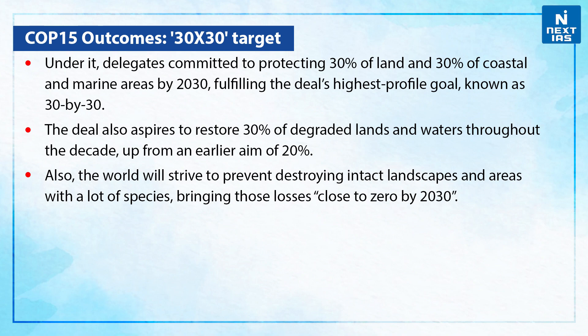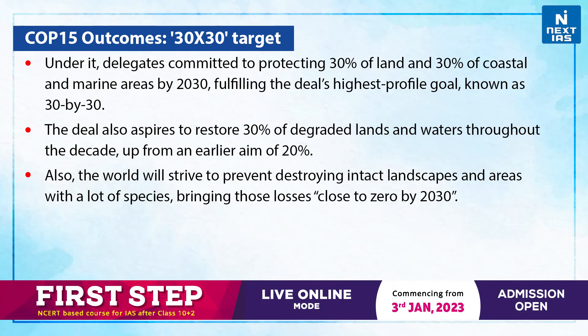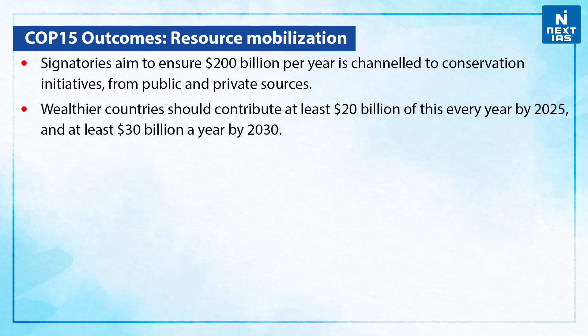The deal also aspires to restore 30% of degraded lands and waters throughout the decade, up from an earlier aim of 20%. The world will also strive to prevent destroying intact landscapes and areas with a lot of species, bringing those losses close to zero by 2030. On resource mobilisation, signatories aim to ensure $200 billion per year channeled to conservation initiatives from public and private sources. Wealthier countries should contribute at least $20 billion every year by 2025, and at least $30 billion a year by 2030.